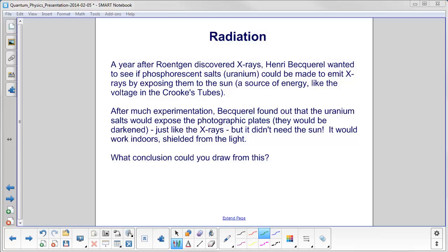A year after Roentgen discovered X-rays, Henri Becquerel wanted to see if phosphorescent salts of uranium could be made to emit X-rays by exposing them to the sun. Again, the sun would provide the energy just like the voltage that was applied in the Crookes tubes that accelerated the electrons that hit the anode that then released X-rays.